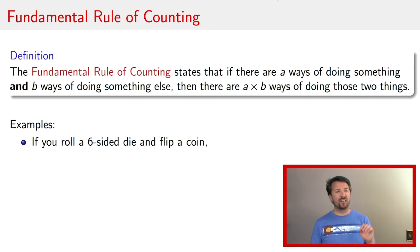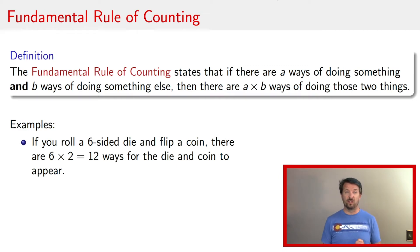As an example, let's consider rolling a six-sided die and flipping a coin. Well, there are, for a standard six-sided die, six ways for that die to come up, and there are two ways for the coin to come up. And therefore, if you ask yourself how many ways are there for the die and the coin to appear, there are six times two or twelve different ways for those two things to occur simultaneously.